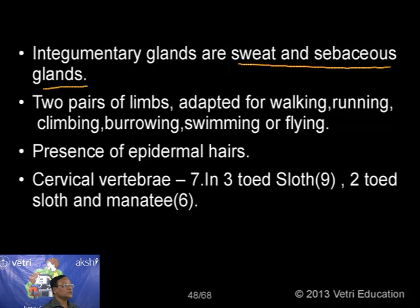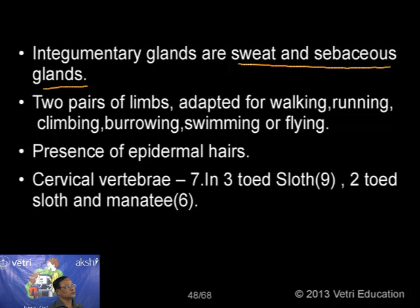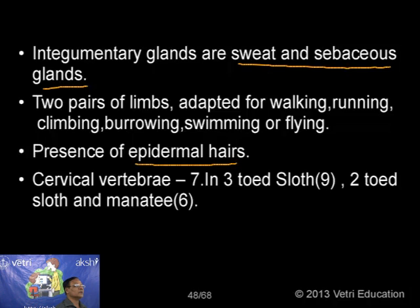In all mammals we have two pairs of limbs, greatly modified for different adaptations — either for walking, running, swimming, flying, or burrowing. In the case of hedgehog, rat, or rabbit, they have the ability of making burrows — leading a fossorial mode of life. Another important character is the presence of epidermal derivatives. Mammals have hairs formed by the epidermis. We have different types of appendages: nails, claws, and hairs on the surface of the body — all formed from the epidermis of the skin, hence called epidermal derivatives.